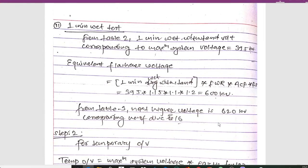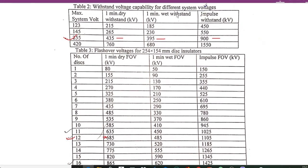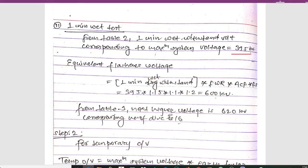For the one-minute wet test: from Table 2, the one-minute wet withstand standard voltage corresponding to maximum system voltage is 395 kV. The equivalent flashover voltage formula is: one-minute wet withstand standard × FWR × ACF × FS. Substituting 395 × 1.15 × 1.1 × 1.2, we get 600 kV.